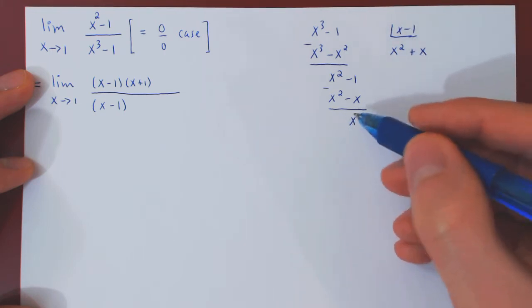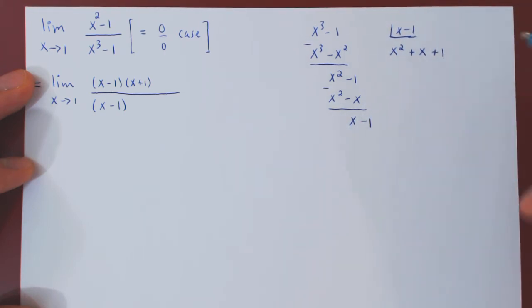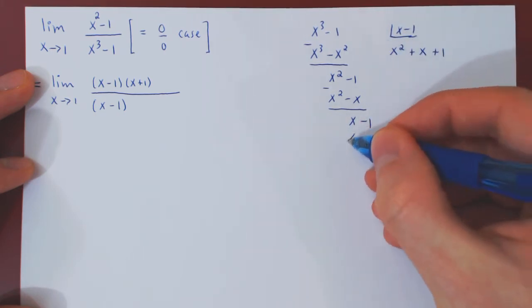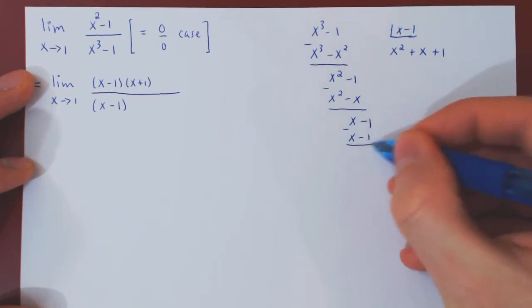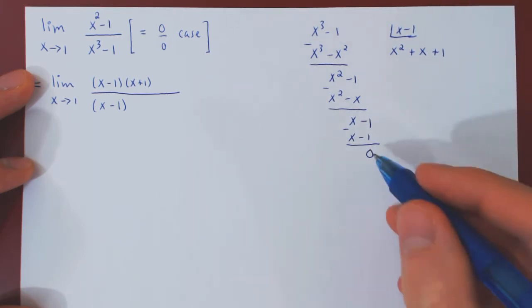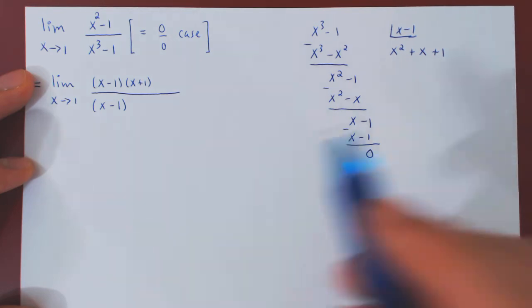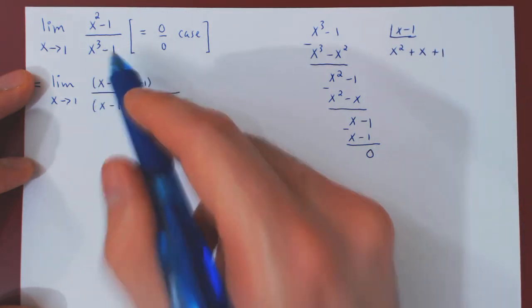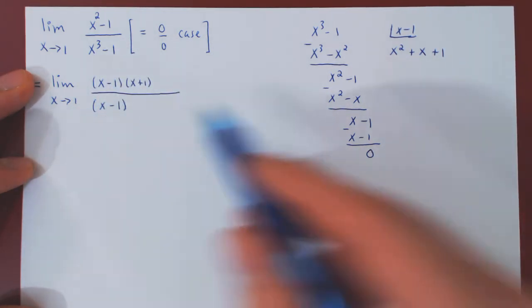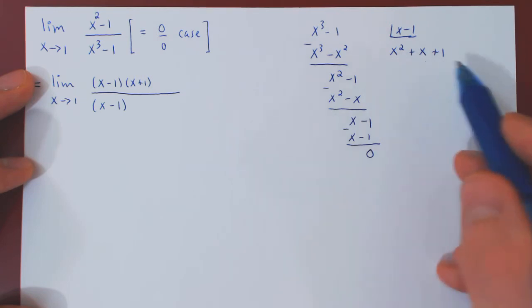What times x is x? Plus 1. So 1 times x minus 1: x minus 1. And we subtract and have a remainder of 0. Which means that x cubed minus 1 factors as x minus 1 times x squared plus x plus 1.